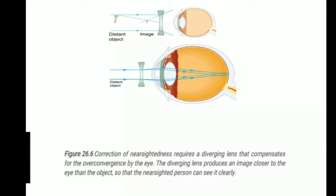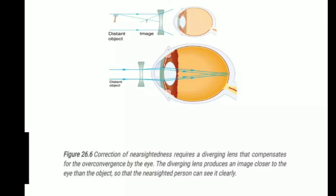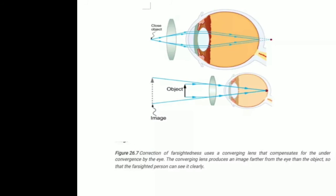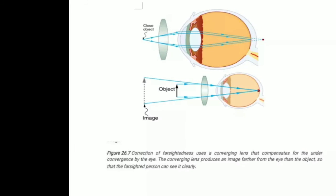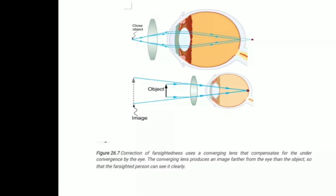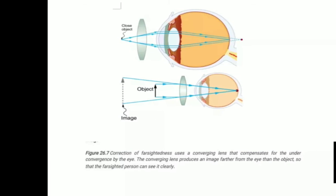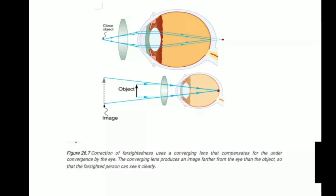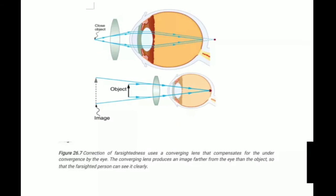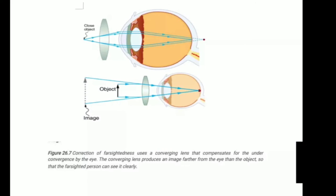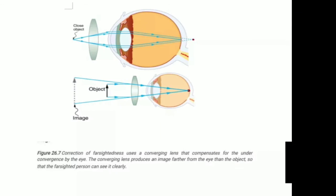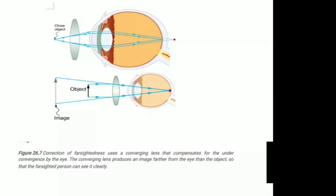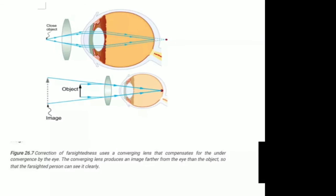Someone wearing glasses can see images that fall between their near point and their far point. Since the farsighted eye under-converges light rays, the correction for farsightedness is to place a converging spectacle lens in front of the eye. This increases the power of an eye that is too weak. A converging spectacle lens produces a virtual image which is farther from the eye than the object. To determine the spectacle power needed for correction, you must know the person's near point — the smallest distance at which the person can see clearly. The image produced by the spectacle lens must be at this distance or farther for the farsighted person to be able to see it clearly.